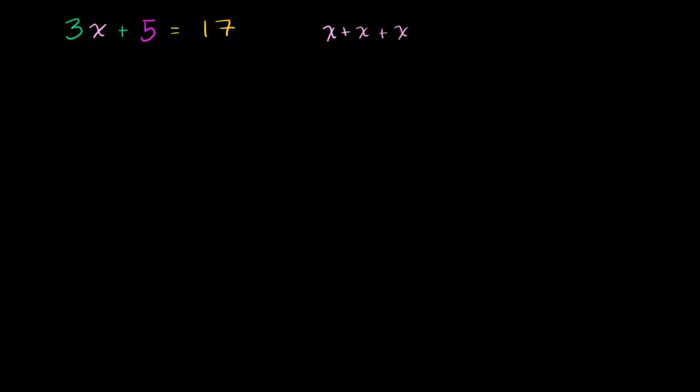And then that's plus 5. And I'm actually going to write it out as 5 objects. So plus 1, 2, 3, 4, 5. That, this right here is 3x plus 5 is equal to 17.